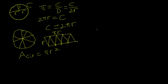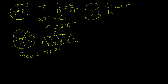Let's look at that once again. We find out that the circumference of a circle is equal to 2πR. If we want to find out the surface area of a cylinder, we have to find out the area of the circle multiplied by two circles, and we have to add the area of the side of the cylinder.